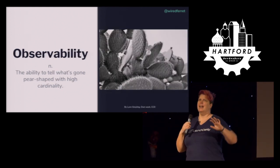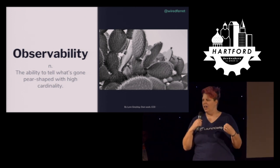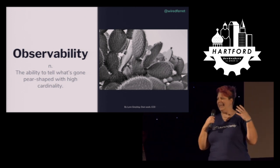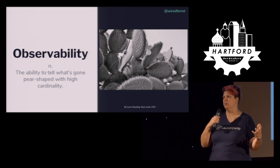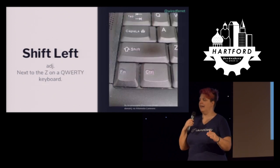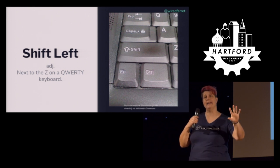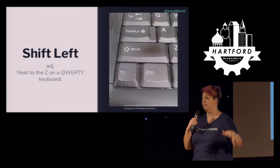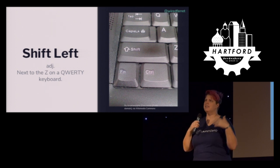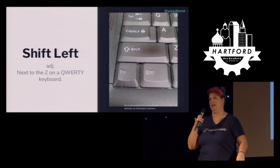Observability is the ability to tell what has gone wrong with really high cardinality, which means you can tell exactly what went wrong. Shift left: it is a key that is next to the Z — or Zed, if you're in Canada — on the QWERTY keyboard. So if someone tells you to shift left, make sure you're using your left pinky and not your right pinky.